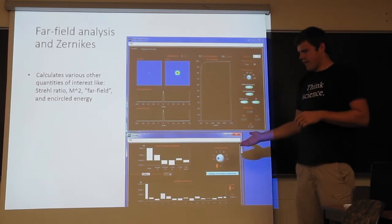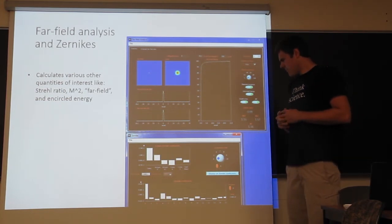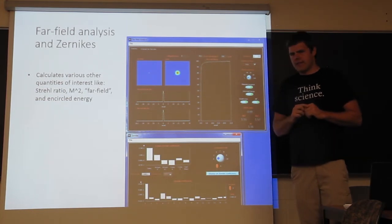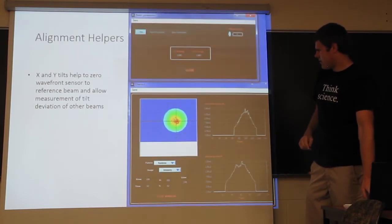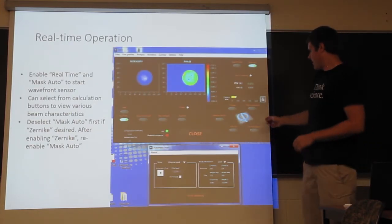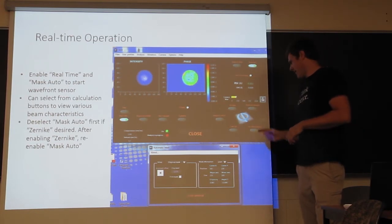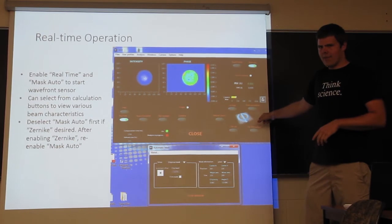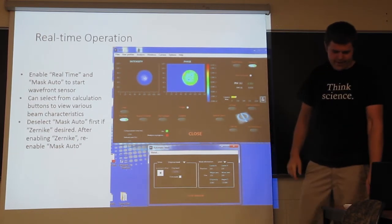And finally, you can also calculate the Zernike's, which you probably aren't surprised that you can do that. One thing to note is that if you want to calculate the Zernike's, you actually need to turn this off first, and open up the Zernike's window, and then turn this back on. Because this is a little software glitch that will gray this out when this is on. But, if you do it in that order, then it works just fine.